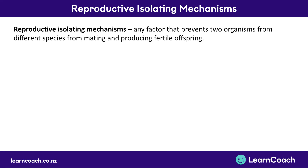The key thing you need to know is the definition. A reproductive isolating mechanism is any factor that prevents two organisms from different species from mating and reproducing fertile offspring. Because if two organisms from different species cannot mate and produce offspring, they are a different species. We'll usually talk about two different species of dog, fly, or fish rather than elephants and mice.